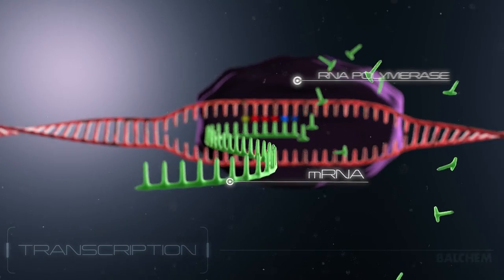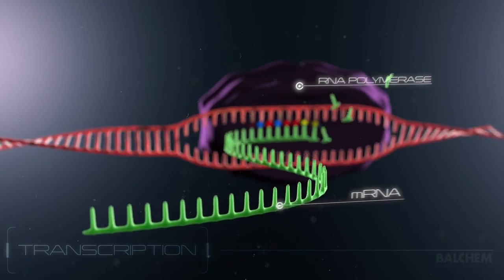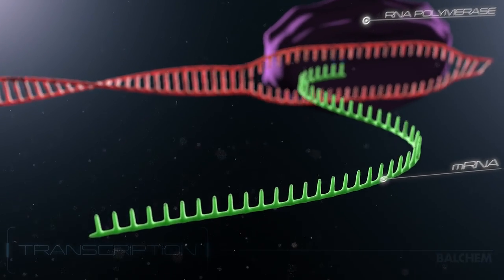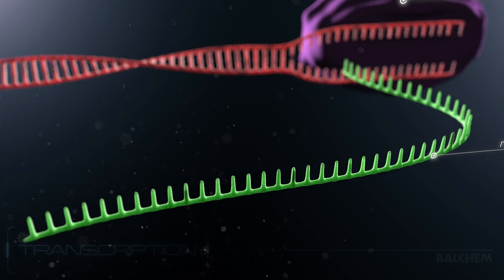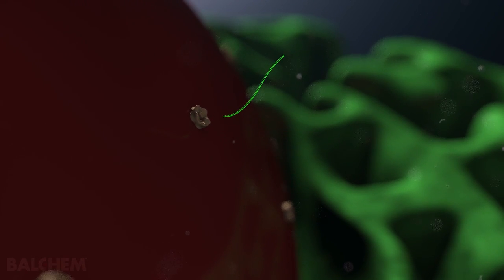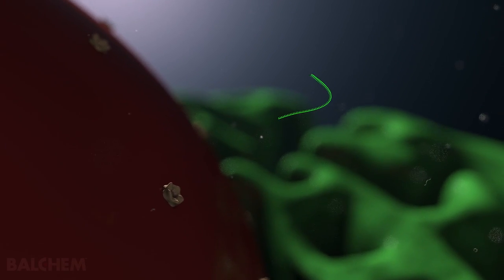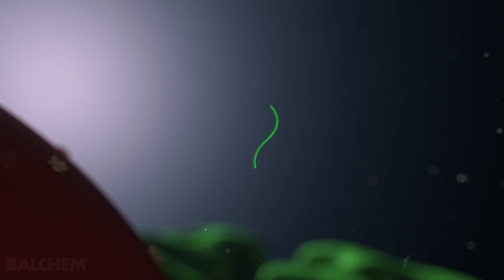When transcription is complete, the messenger RNA strand carries the genetic information for making milk protein from the cell's nucleus to the molecular factory called a ribosome, where the process of translation begins.